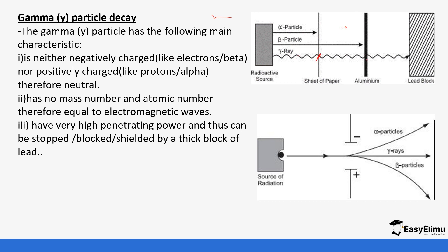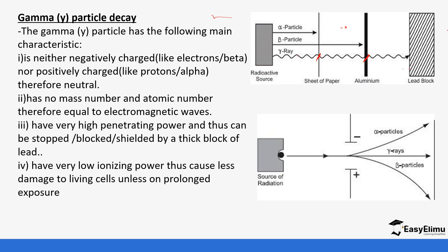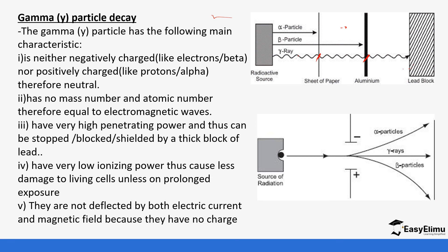Gamma rays can pass through paper and through aluminium, but are stopped by lead. They have very low ionizing power, so they cannot cause any damage to living cells unless in prolonged exposure. Gamma is not deflected by electric current or magnetic field because it does not have any charge, as you can see in the setup — there is no deflection whatsoever.